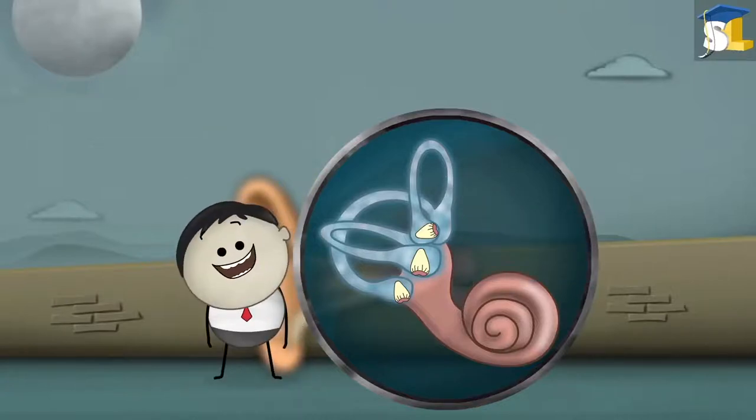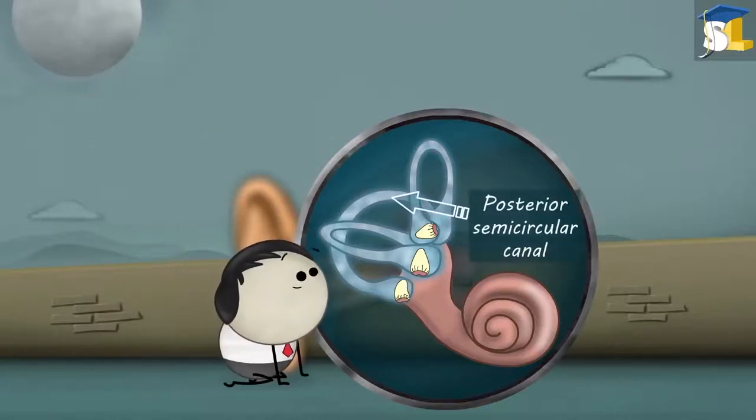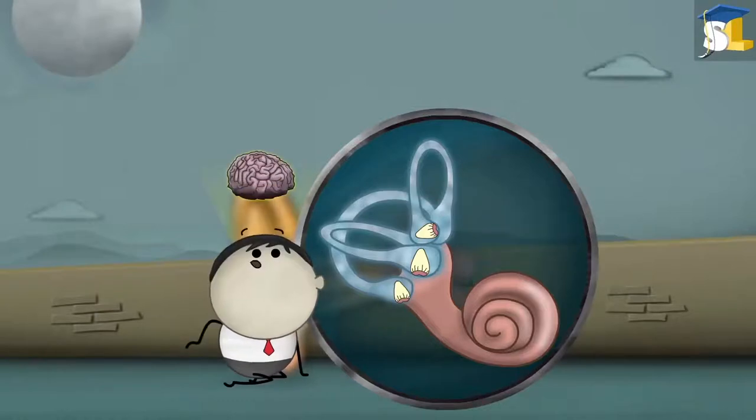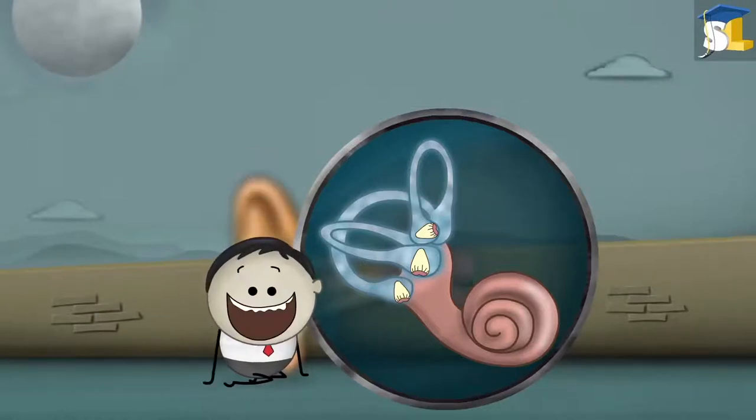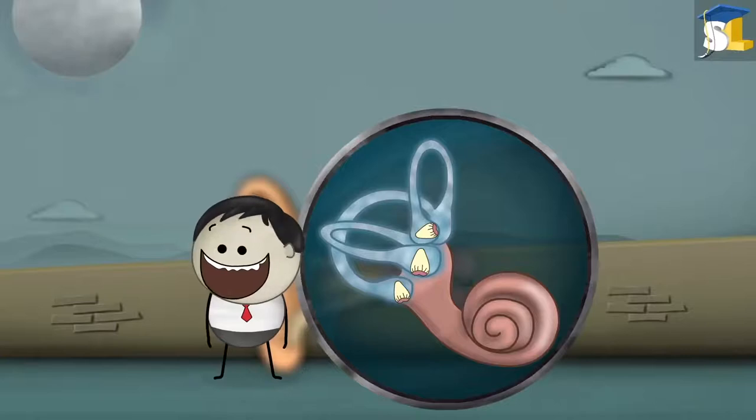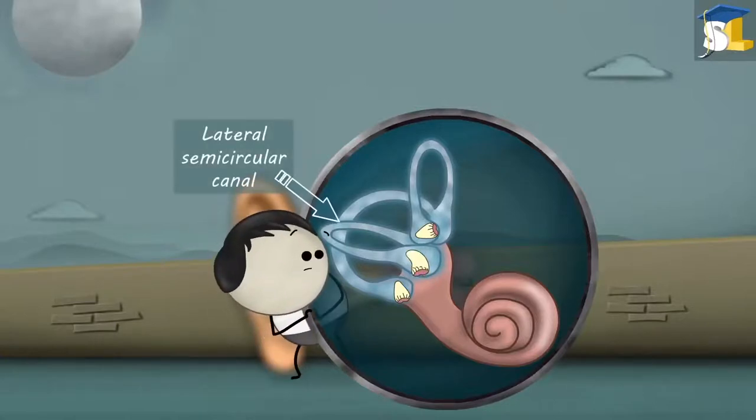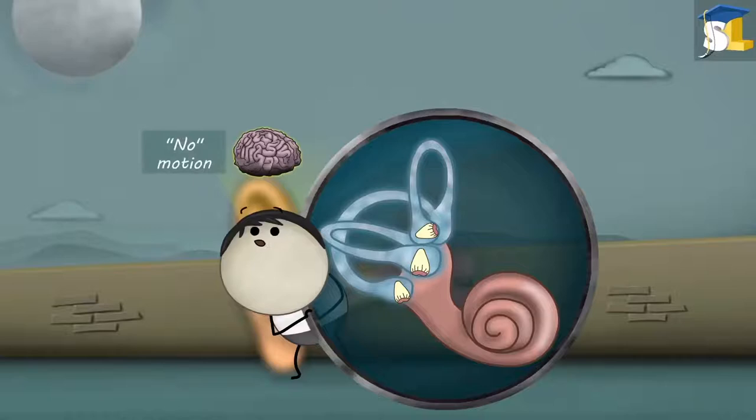When we tilt our head towards our shoulders, the posterior semicircular canal helps our brain to understand the tilting motion. When we move our head from side to side, the lateral semicircular canal helps our brain to understand the no motion.